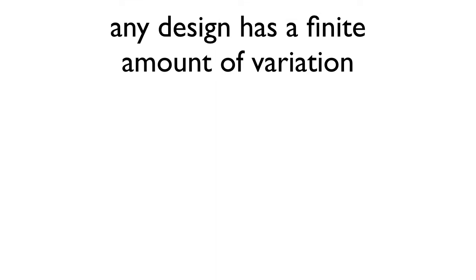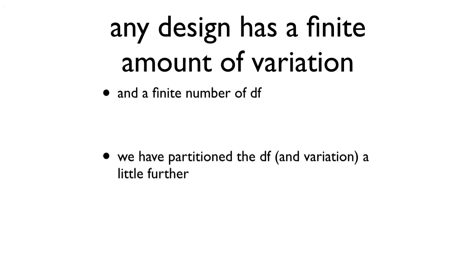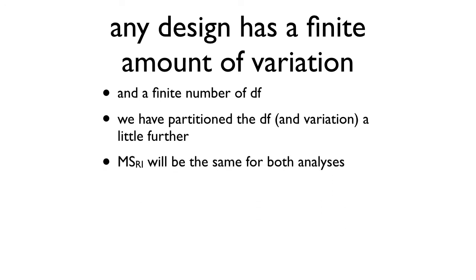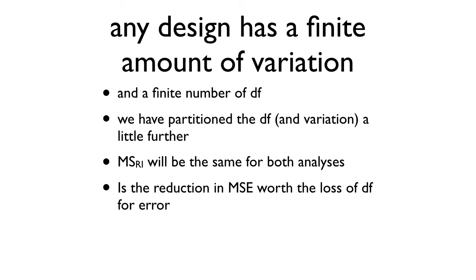Any design has a finite amount of variation and a finite number of degrees of freedom — it's a fixed thing, and it's how we partition it that allows us to analyze stuff. We've partitioned the degrees of freedom and the variance a little further than with one-way ANOVA. You can only do this with repeated measures, because we can throw in the effect of subjects — we can't do that if we're not testing the same people over and over. Mean squared for retention interval will be the same for both analyses. But is the reduction in mean squared error worth the loss of degrees of freedom? Almost always, yes.